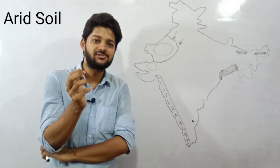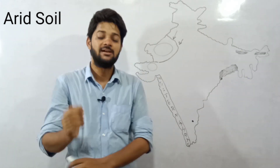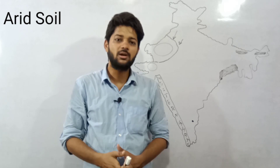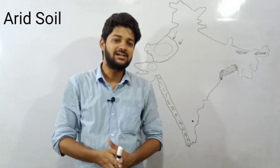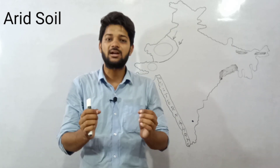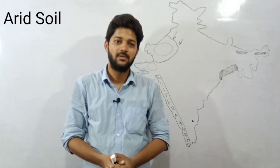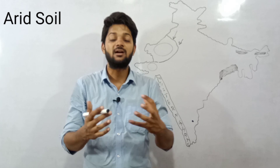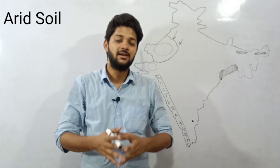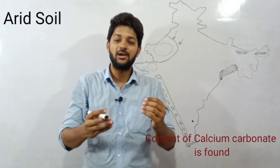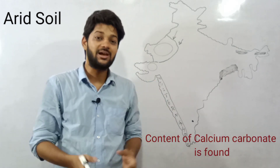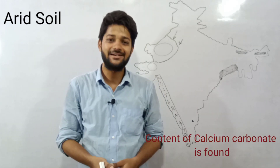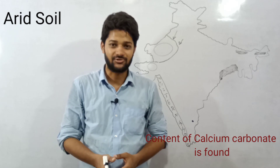The last point in arid soil is that in the lower horizon of arid soil, calcium carbonate content is found — meaning kankar (calcium carbonate nodules) are found in the lower layer of arid or desert soil.